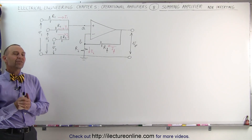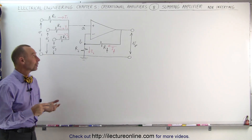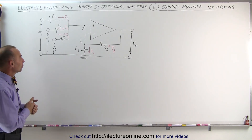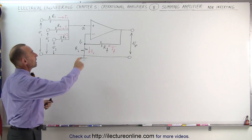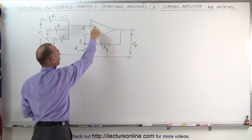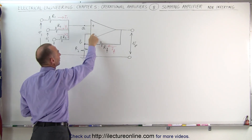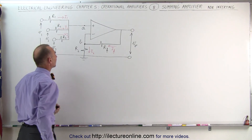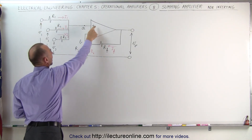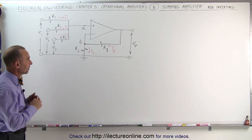Welcome to ElectronLine. Let's take a look at a summing amplifier with the non-inverting operational mode. Notice that to do that we have reversed the input signals right here — we made that the plus and that the minus. This means non-inverting, this means inverting. So the input signals are connected to the non-inverting terminal of the operational amplifier.